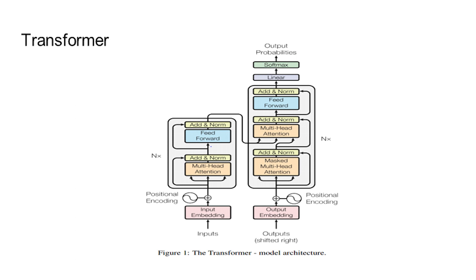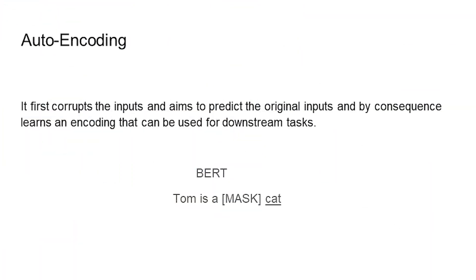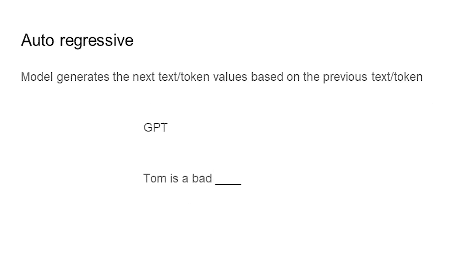There are two types of attention-based models: auto-encoding and auto-regressive. BERT is an auto-encoding architecture trained only on the encoder part and is bidirectional, giving it bidirectional context. An auto-regressive model like GPT, on the other hand, is trained only on the decoder part and is unidirectional.